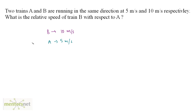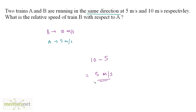Now you have been asked what is the relative speed. First of all, check in which direction both the objects are running. These two trains A and B are running in the same direction. So if they are running in the same direction, it means that we have to subtract their speeds. We have been asked the relative speed of B with respect to A. So the speed of B is 10 minus the speed of A which is 5, and that is equal to 5 meters per second. That is the relative speed of train B with respect to A.